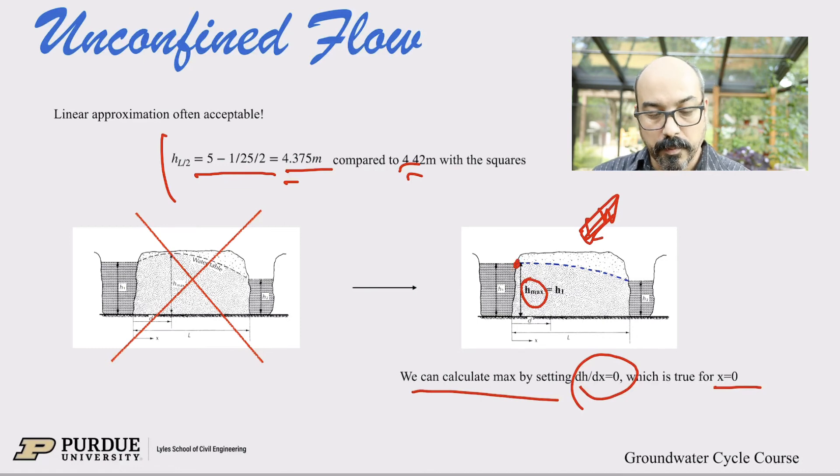But in this case, the maximum head, so the dh/dx equals zero, the maximum head is actually at the input. This is the maximum. And from here it goes down. Okay. So there's not a bump in the middle, like the previous graph here suggests. This is actually wrong. We're actually going down from H1 to H2. So the maximum again is that X equals zero is right here. This is the maximum. Okay.